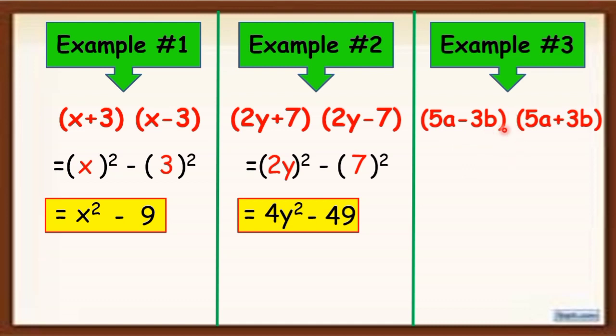Next example. (5a - 3b)(5a + 3b). Same process. You are going to square the first term which is 5a and you are going to square the second term or the last term which is 3b. Now, simplify.